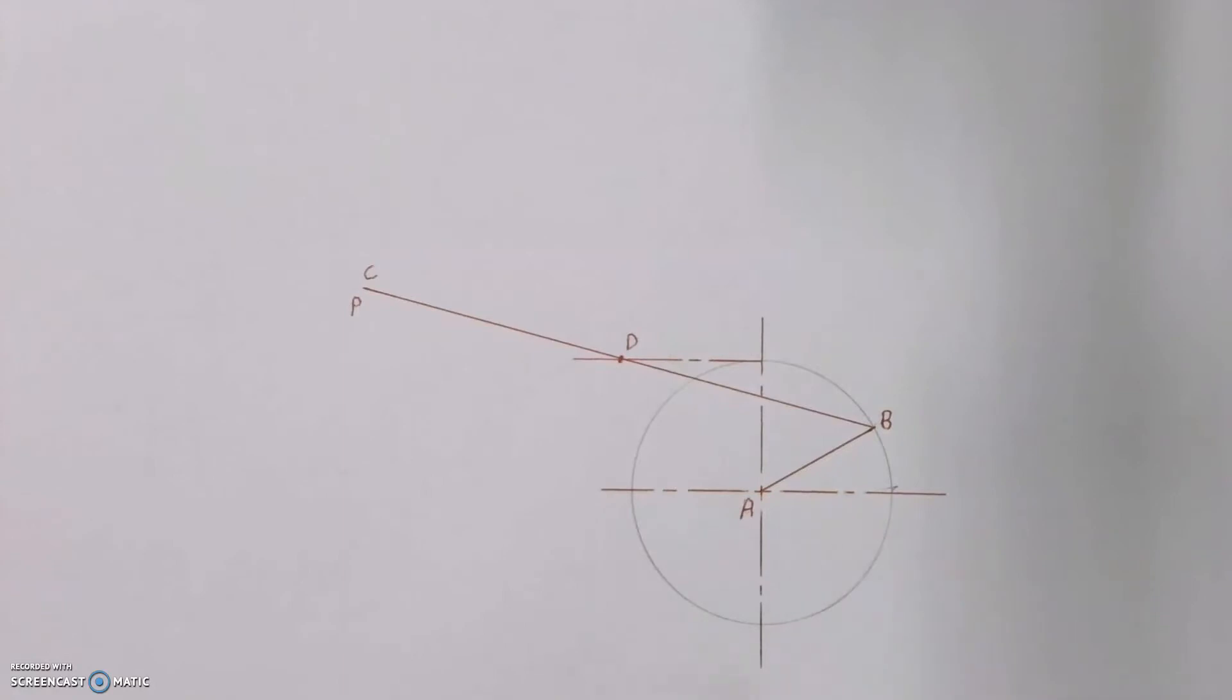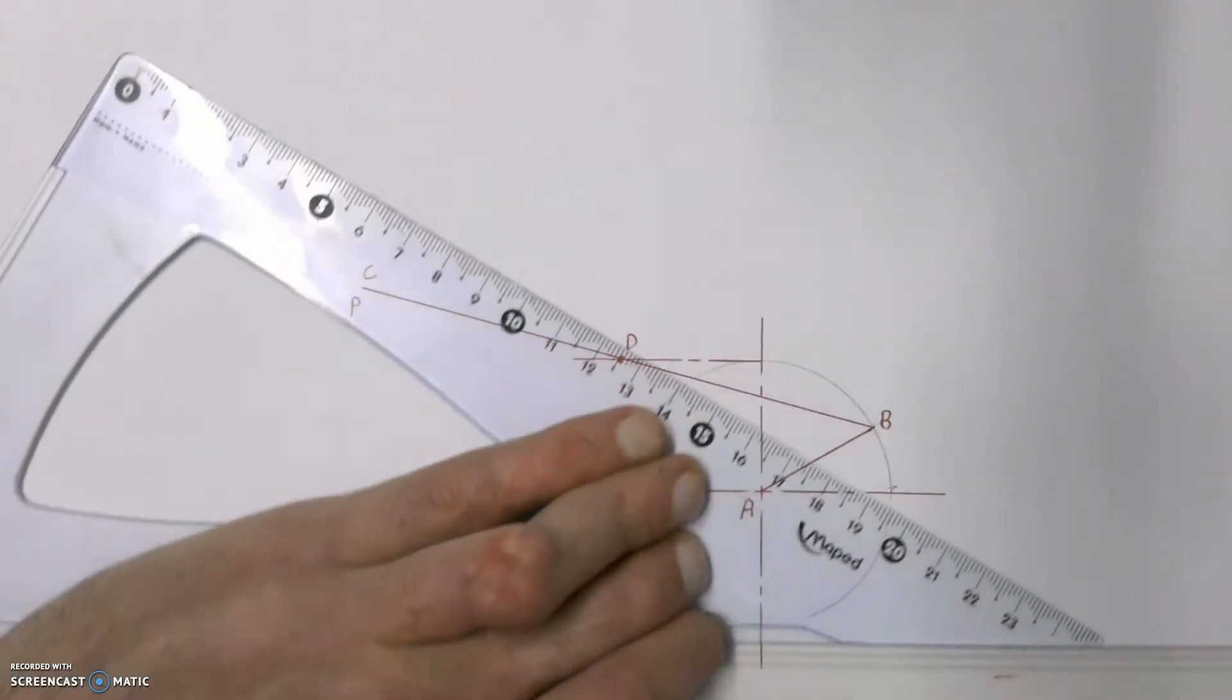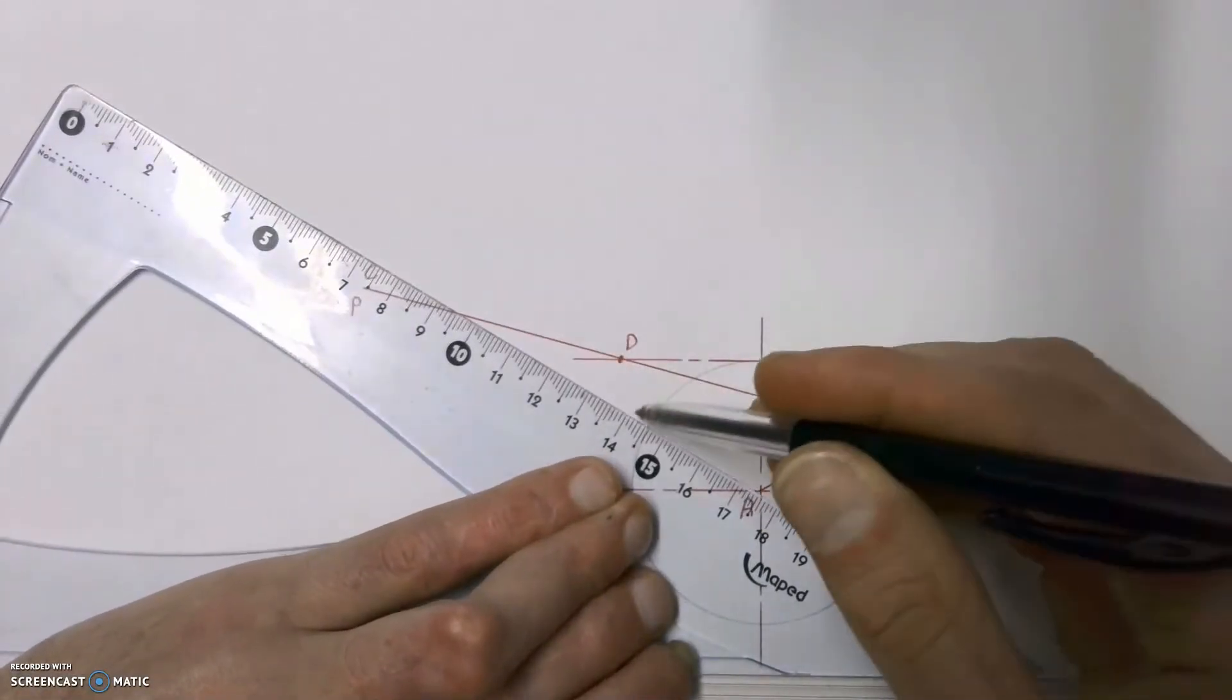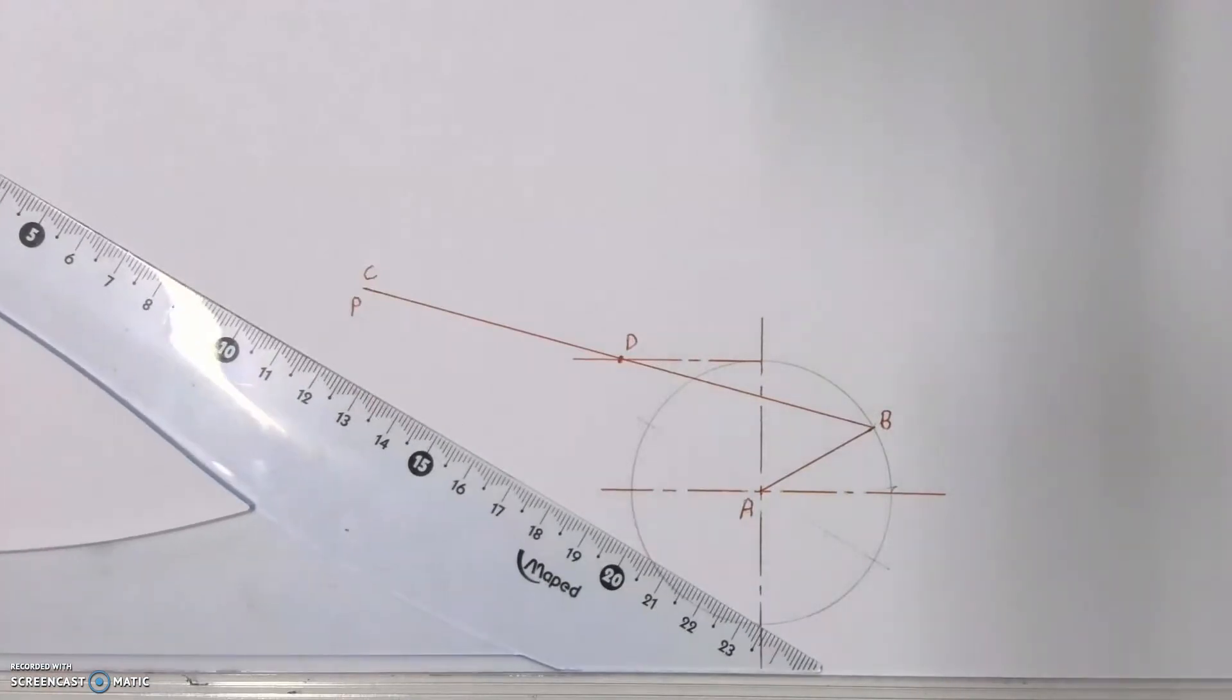We're going to start off like we do with any of these by breaking up our circle, the fixed motion formed by point B, into 12 equal parts. To do that for a circle we use a 60 and 30 degree set square and we're in construction going to break that up into 12 neat equal parts.